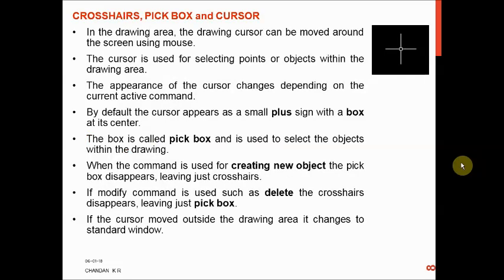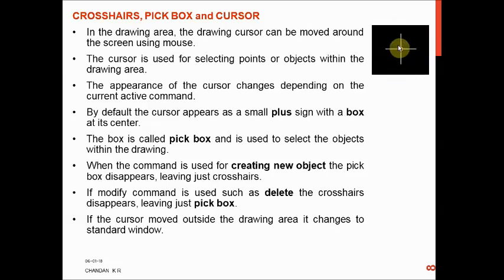The crosshairs, pick box, and cursor together are called the cursor. When we move the mouse over the CAD screen, the cursor changes depending on the current active command — whether it is from the draw toolbar or the modify toolbar. By default, the cursor appears as a small plus sign with a small box at its center.